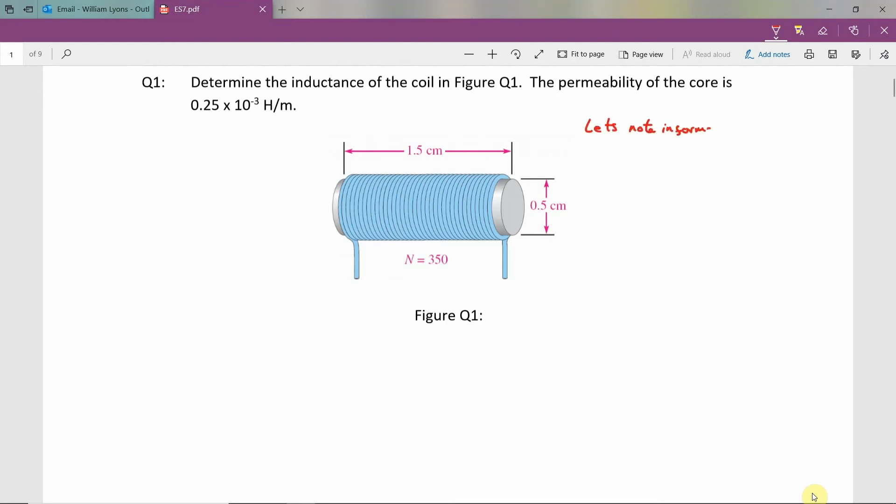Let's start by reviewing the information that's given to us within the question. We are asked to calculate the inductance L. We are told the permeability of the core, we'll use the symbol mu, is equal to 0.25 by 10 to the power minus 3 Henry's per meter.